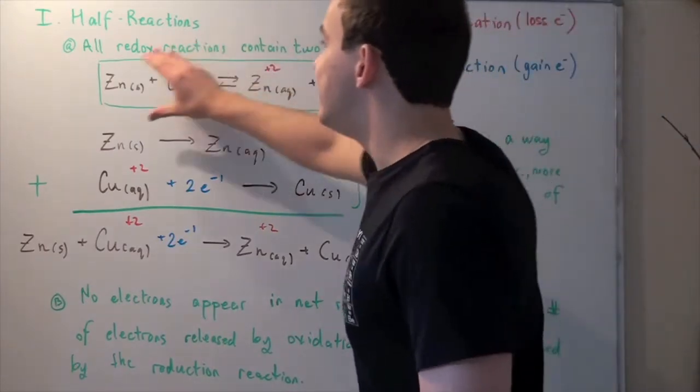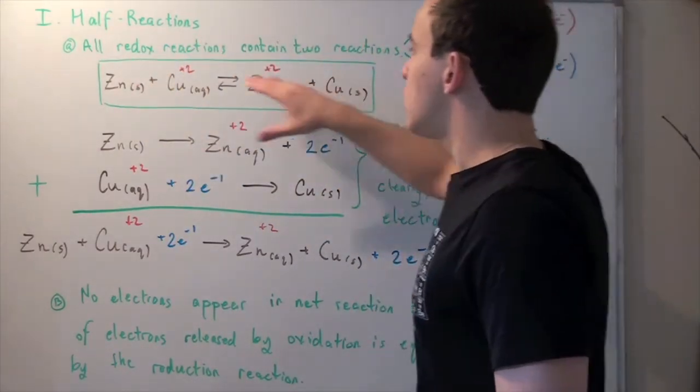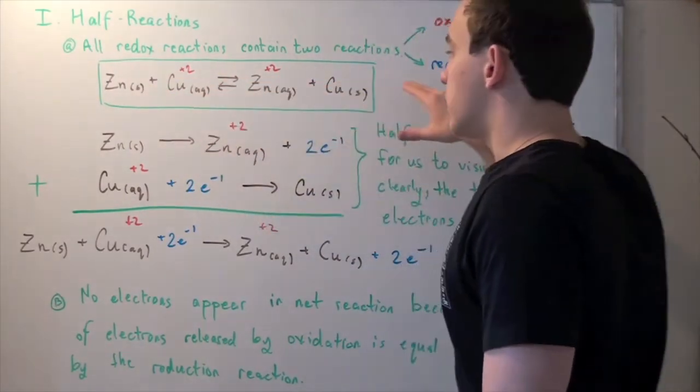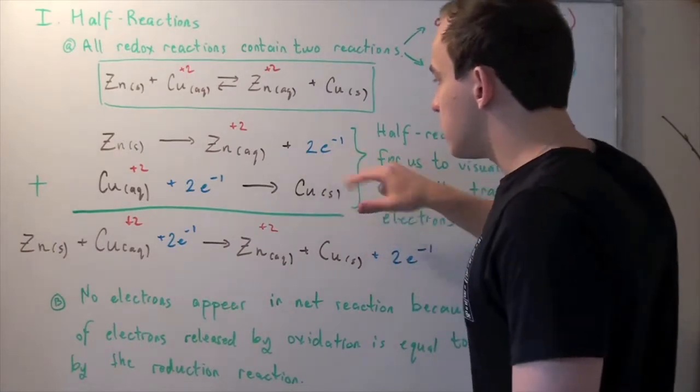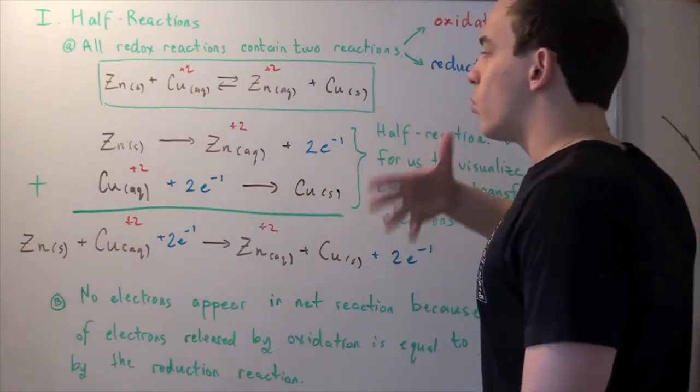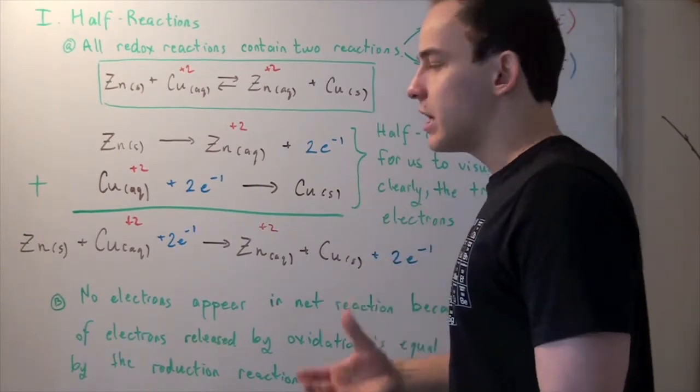Because notice in this net reaction there was no transfer of electrons. We couldn't visualize the transfer of electrons. But in these half-reactions we have the plus 2e and plus 2e. So this is simply a better way for us to see the movement of electrons.